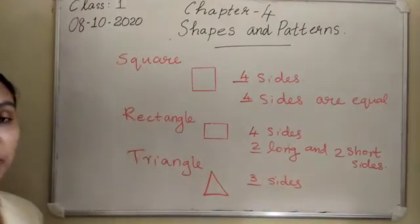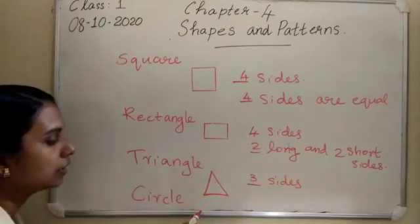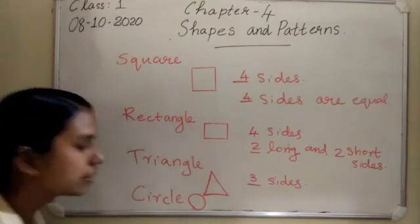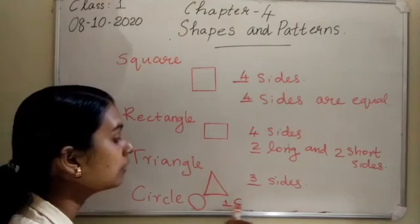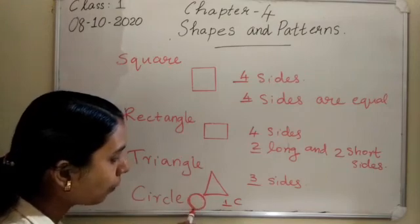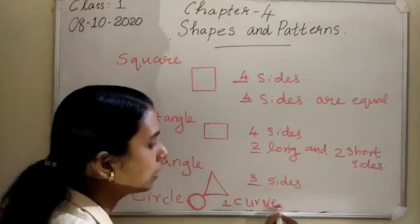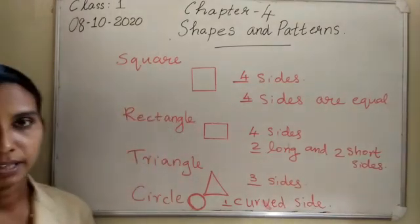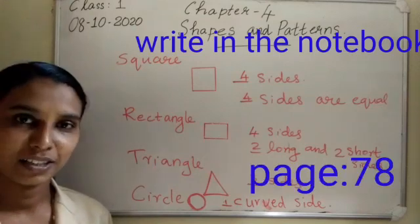And the last shape you have to study is circle - C-I-R-C-L-E. You can take your bangle and draw a circle. A circle has one curved side - no straight line. It looks like the letter O. A circle has one curved side. Write this down in your notebook and also do page number 78. Today's class is over.